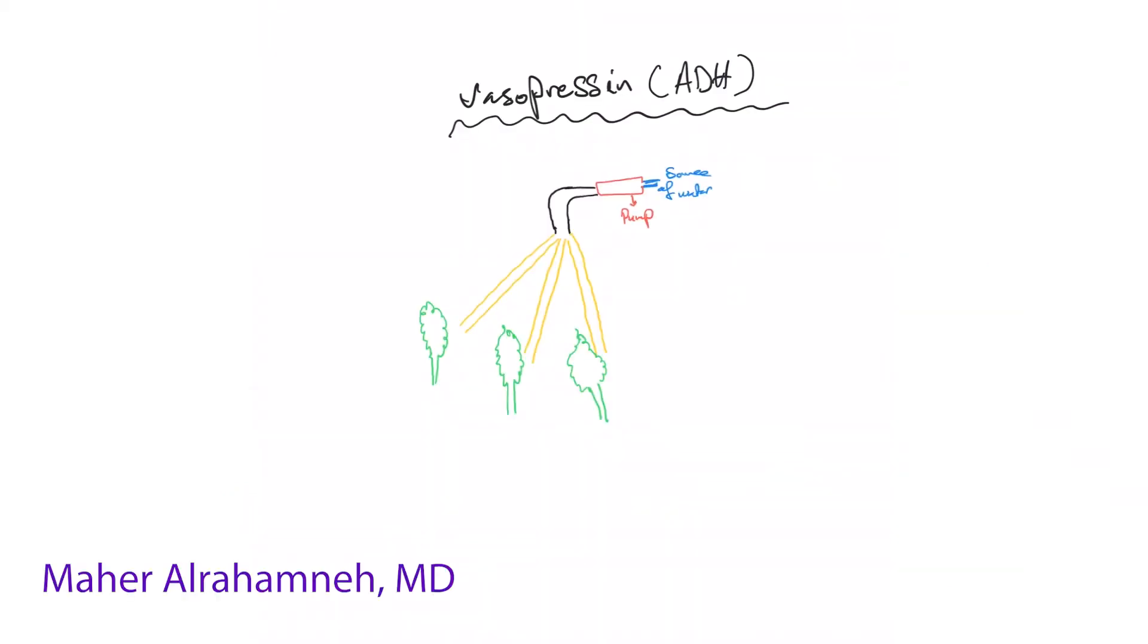Now let's move to vasopressin after norepinephrine. There is a reason I'm talking about this right after norepinephrine. I'll show you in a second. Vasopressin works right here in making the vessels narrower.